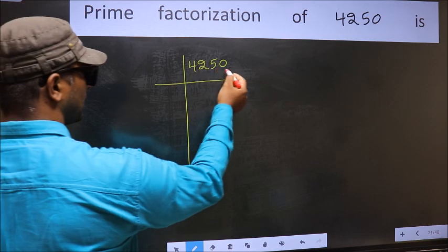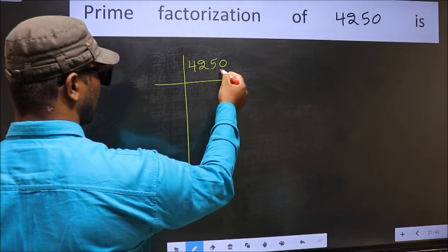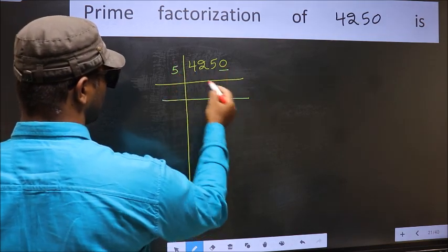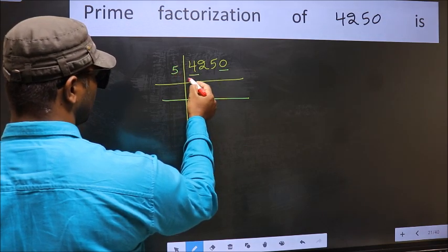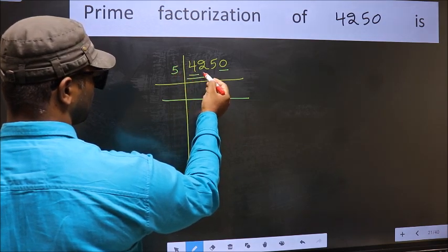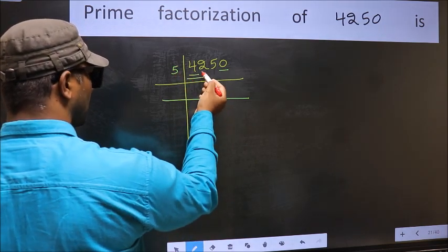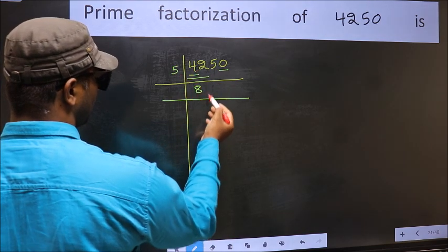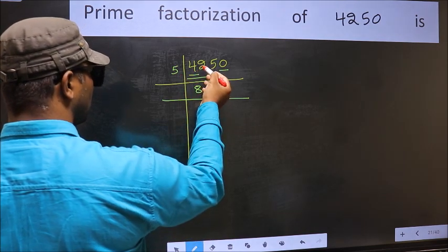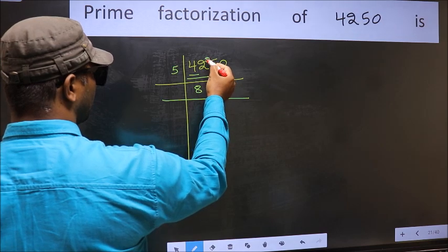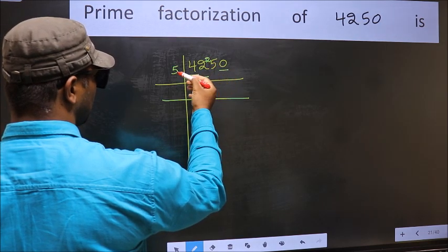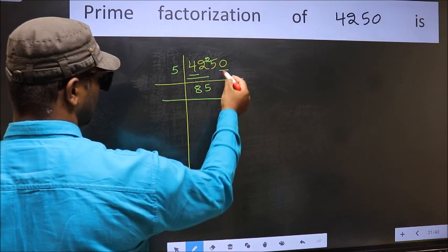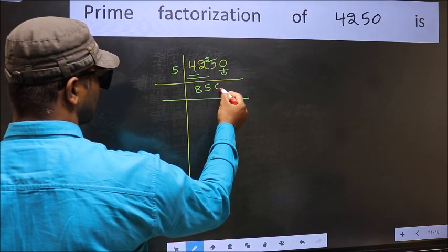In this number, the last digit is 0, so take 5. The first number 4 is smaller than 5, so take two numbers: 42. A number close to 42 in the 5-times table is 5×8=40. 42 minus 40 is 2, carried forward: 25. When do we get 25 in the 5-times table? 5×5 is 25. Bring this 0 down.